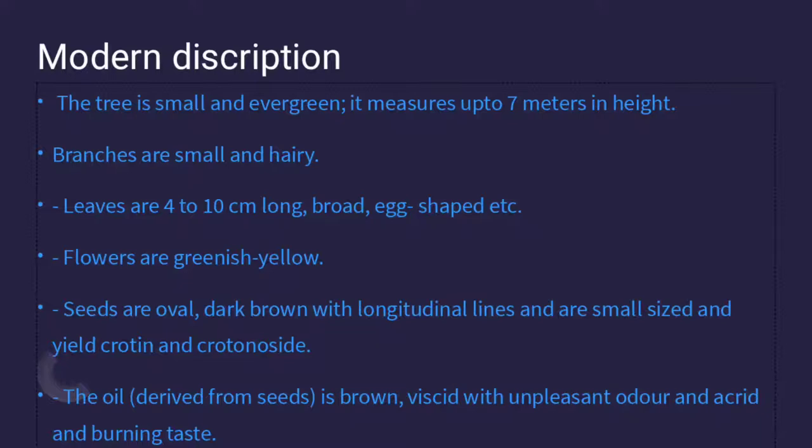Modern description: The tree is small and evergreen, measuring up to 7 meters in height. Branches are small and hairy. Leaves are 4 to 10 cm long, broad, and egg-shaped. Flowers are greenish yellow. Seeds are oval, dark brown with longitudinal lines, small in size, and yield crotin and crotonosid. The oil derived from the seeds is brown, viscous, with an unpleasant odor and an acid and burning taste.